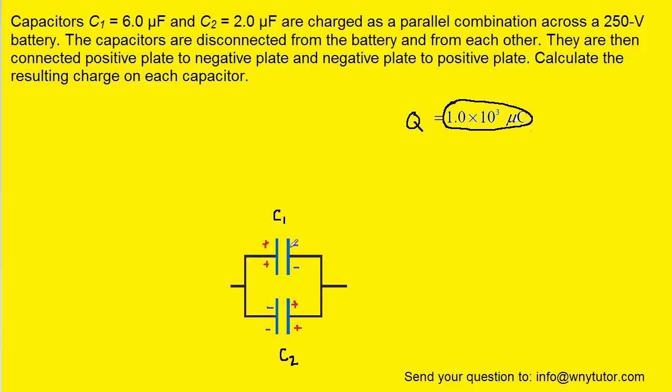Now notice that because the capacitors are connected in parallel, that means that the equivalent capacitance of these two capacitors is simply the sum of the individual capacitances. That's an overall rule that we would use for the equivalent capacitance of a parallel arrangement of capacitors. So we're going to calculate the equivalent capacitance of the system by simply summing the individual capacitances.